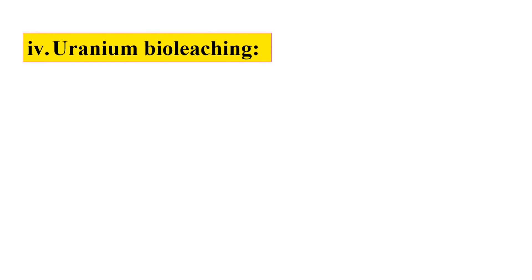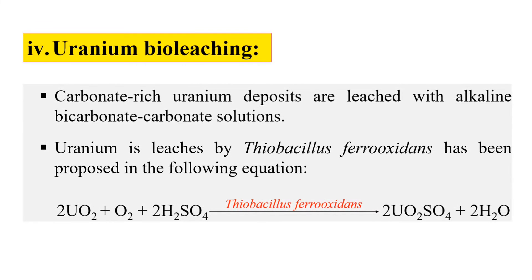The next example of bio-leaching is uranium bio-leaching. Uranium is a fuel generally used in nuclear power generation. It is present as tetravalent uranium oxide in low-grade ores and is insoluble. It can be converted to a leachable form by oxidation with ferric ions. Carbonate-rich uranium deposits are leached with an alkaline bicarbonate-carbonate solution. The bacteria used for uranium bio-leaching is Thiobacillus ferrooxidans, which oxidizes uranium dioxide in the presence of sulfuric acid, and from this we can extract the uranium.